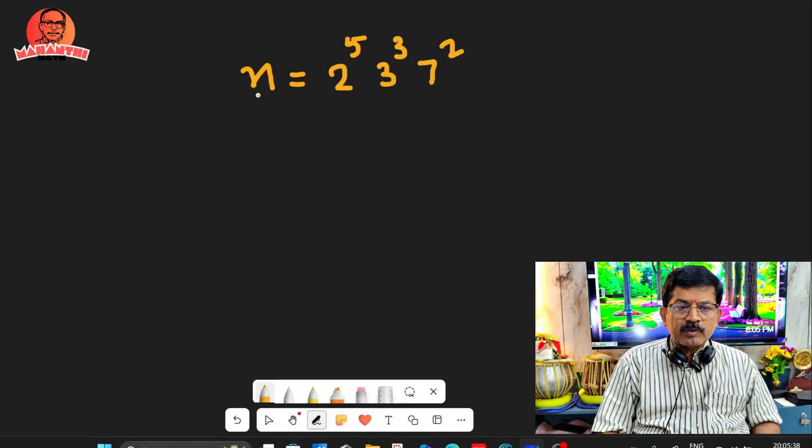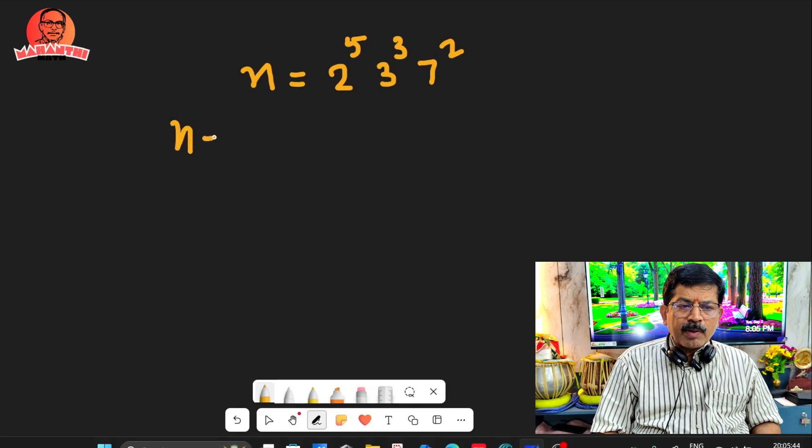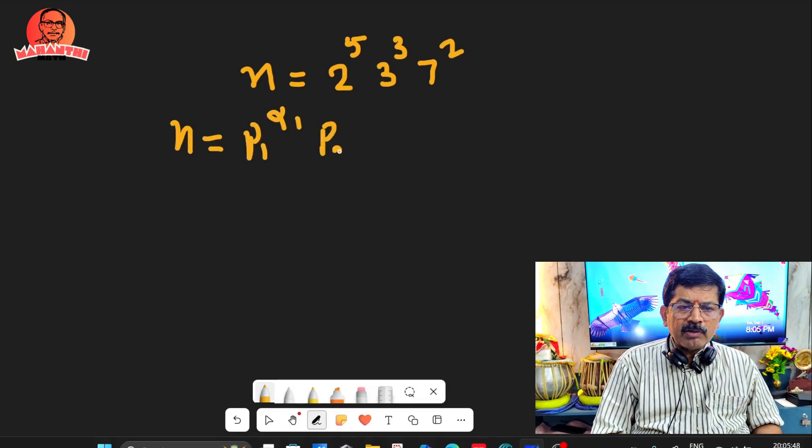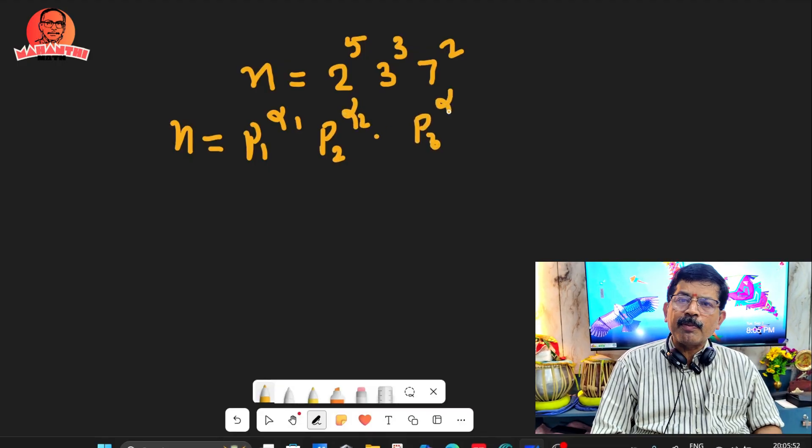For this, I told already if n equals first prime number to the power alpha 1, second prime number to the power alpha 2, third prime number to the power alpha 3, and so on, any number of prime numbers are there.